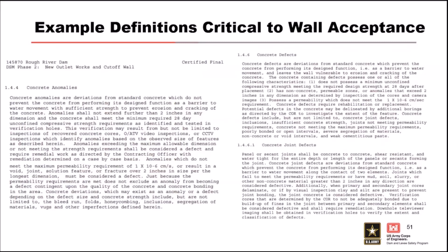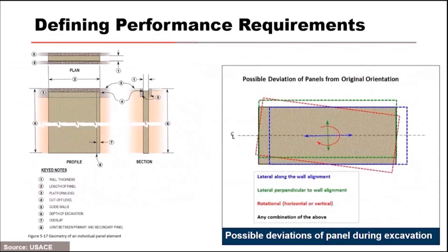Seepage barriers are performance elements. How do we specify them? You want to specify the minimum geometries — the height, length, and width. When you specify width, make sure it's continuous width, because not every contractor is going to have equipment that can achieve the continuous width at the same gross width. For example, contractor one might say they need three-foot tooling to achieve a two-foot continuous wall, while contractor two may need five-foot tooling to achieve that. We don't want to dictate those means and methods unnecessarily. Specify wall width as a continuous wall so the contractor has the ability to optimize their means and methods when putting their bid together.